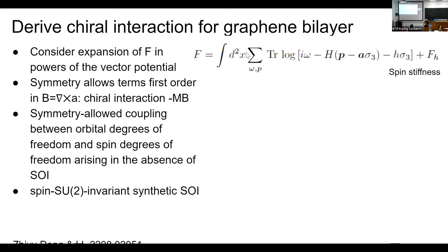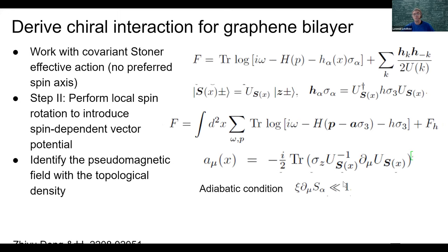A question from the chat: is the field b homogeneous in space? The field b is proportional to s·(∂s × ∂s), so whatever spin density does, b will replicate that — it may be homogeneous or not. Using the adiabatic condition, I tend to assume the spin magnetization varies slowly, so everywhere locally one can approximate a nearly uniform spin density and therefore nearly uniform magnetic field, but no special assumptions otherwise.